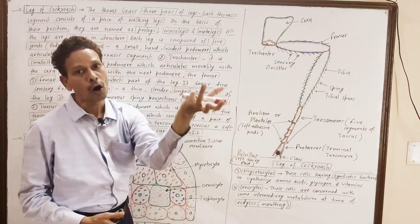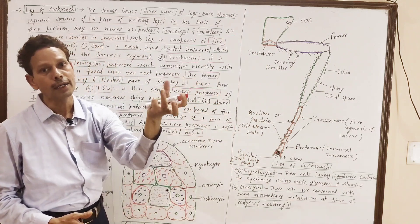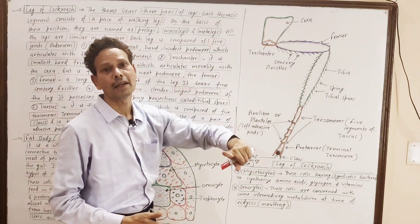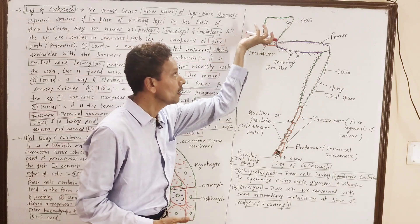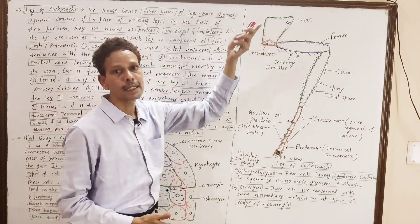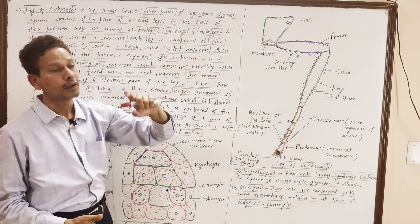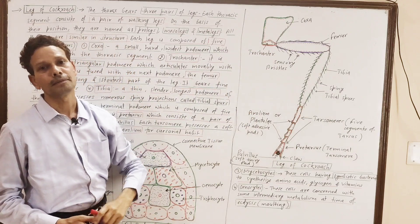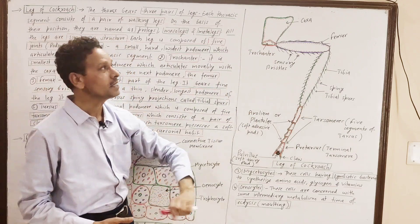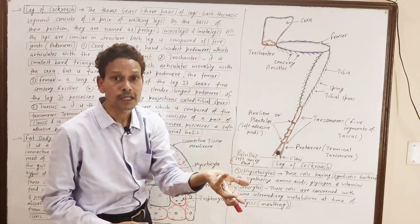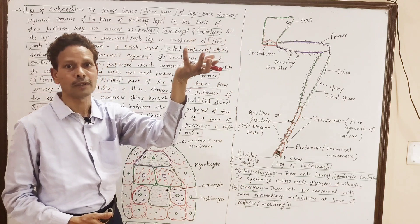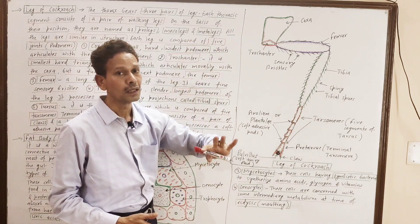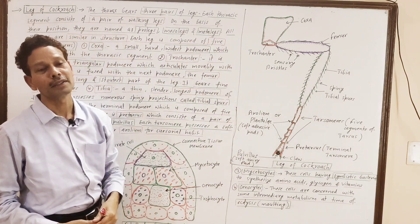Coxa is a small, hard, widest part of each leg, and it is involved in the articulation of the leg with the thoracic segment. This coxa helps in articulation with the thoracic segment.